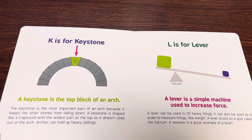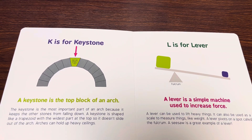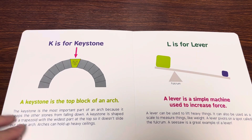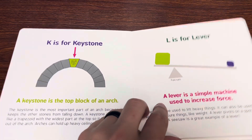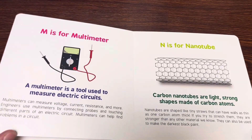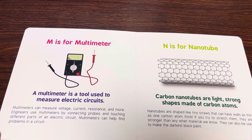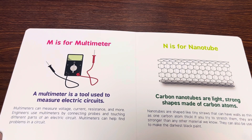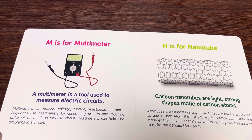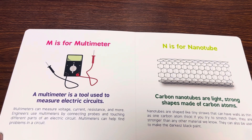L is for lever. A lever is a simple machine used to increase force. M is for multimeter. A multimeter is a tool used to measure electric circuits.